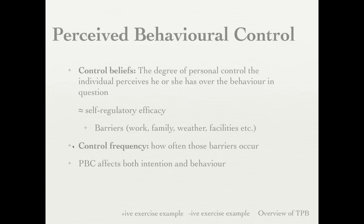What's different from social cognitive theory is that this theory also accounts for how often someone sees these barriers — called control frequency. For example: how many of you think you can make it to class if there is a hurricane? Most probably don't think they can — that's control beliefs. But control frequency asks how often do we have hurricanes in Toronto? Not very often. Whereas stress and lots of work — that's also a control belief, but the control frequency of stress is likely quite high in your life.